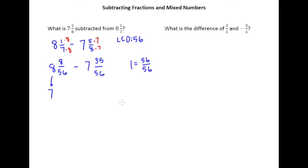Those are the same. And so we're just adding the denominator which is 56 to the numerator which is 8. And we end up with 64/56. And we'll subtract off 35/56. 7 minus 7 is 0. 64 minus 35 we end up getting 29.